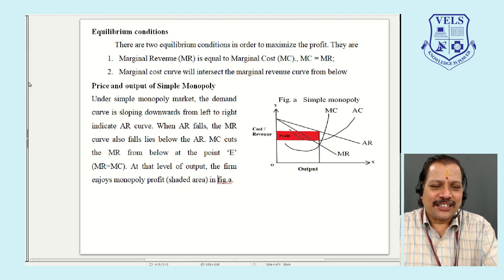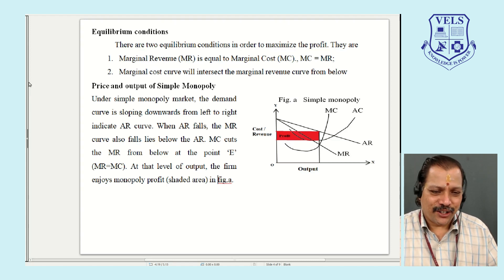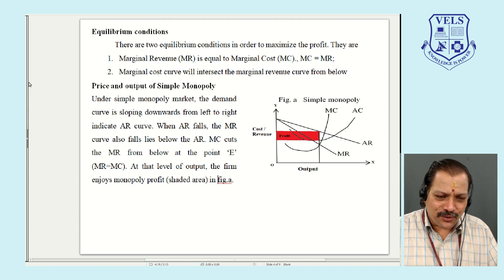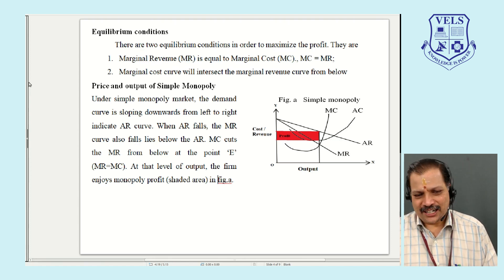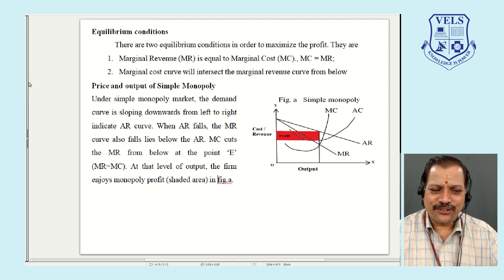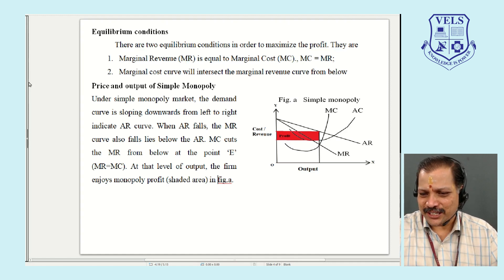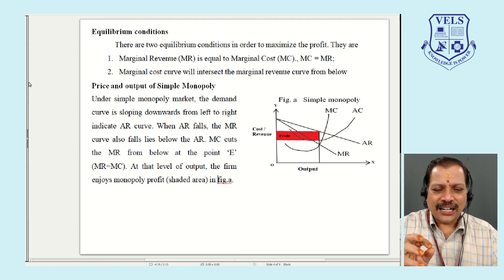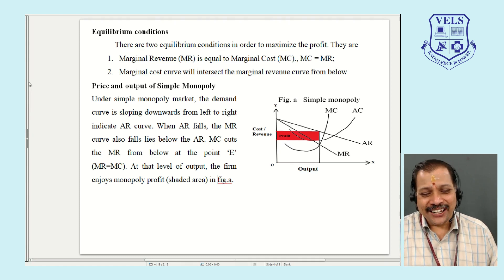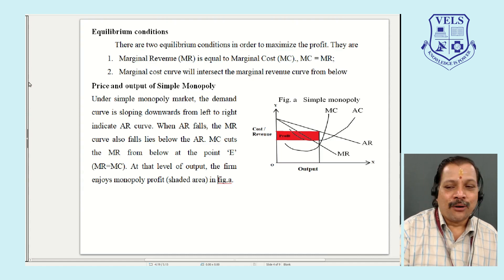Under the simple monopoly market, the demand curve slopes downward from left to right, indicating the AR curve. When AR falls, MR also falls and lies below AR. MC cuts MR from below at point E — the equilibrium point. At that level of output, the difference between average revenue and average cost represents profit, shown in red in the figure — this is the abnormal monopoly profit.